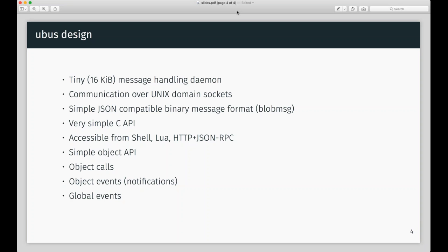At the moment the U-Bus daemon still runs as root, but this is something we can easily fix. My main focus regarding security is reviewing the code and keeping it as simple as possible to minimize the potential for security errors. In terms of access control, by default only root can access things you publish on the object. Anything that needs to be accessible to non-root users needs to be explicitly whitelisted. If you open up a service on U-Bus and don't add any ACL entries, it's only accessible to root by default.